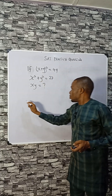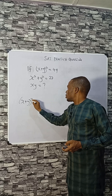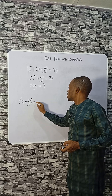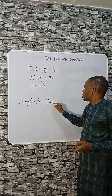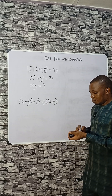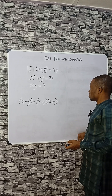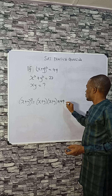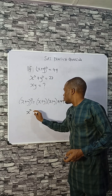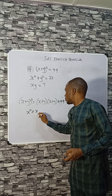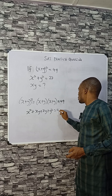First, expand this bracket. (x + y)² can be expanded as (x + y)(x + y), and it equals 49. Multiplying through gives x², then xy, the same xy, then y², all equals 49.